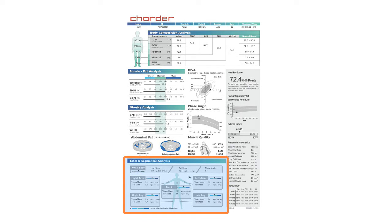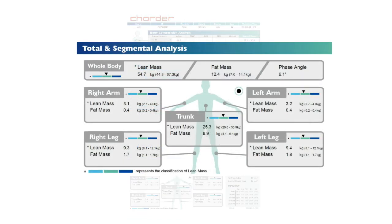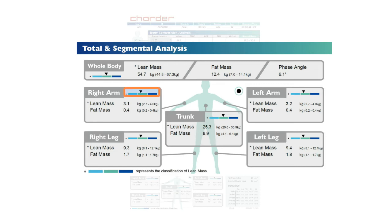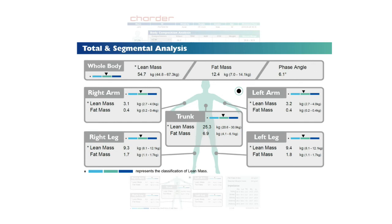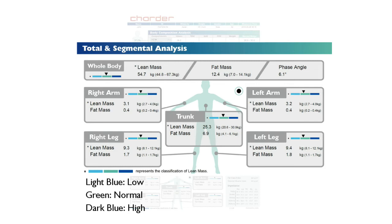Next is segmental analysis. In addition to whole-body muscle and fat mass, this part divides your body into five sections: right arm, left arm, right leg, left leg, and trunk. It tells you how much muscle and fat you have in those sections, and the location of the triangle tells you if the lean mass in those segments is under, normal, or over. This is very useful for designing a workout program — for example, if you observe that you have comparatively more muscle in your arms than your legs, you can focus your efforts on training your lower body. There are three colors: light blue means muscle is low, green means normal, and dark blue means higher than normal muscle.